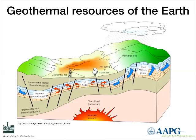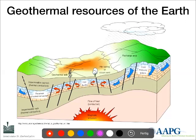How does a typical geothermal system look and which important elements do we need? We need a heat source — in this case a magma intrusion, which could also be a cooling radiogenic heat-producing granite. It doesn't have to be magma; it could simply be the geothermal gradient, which may be a little higher. So we need heat in the first place.